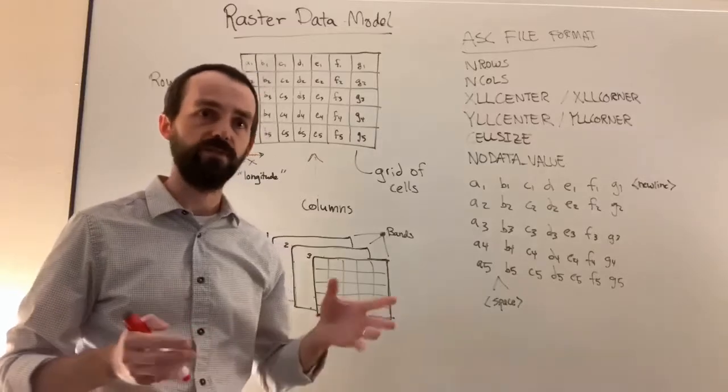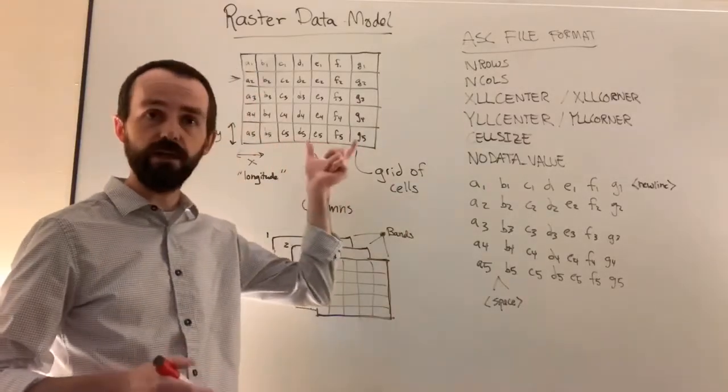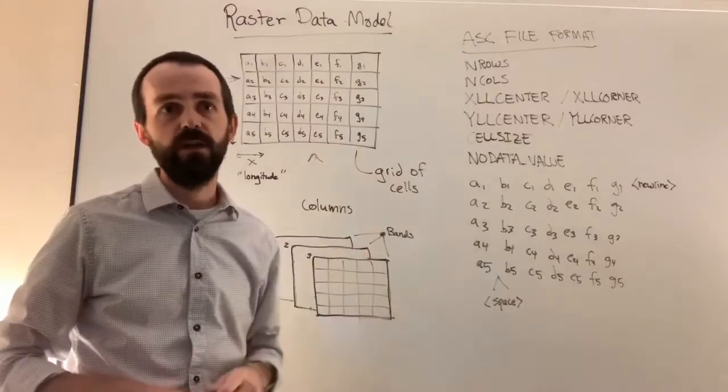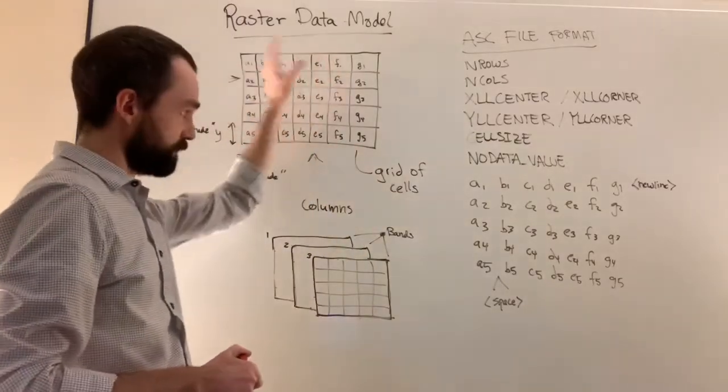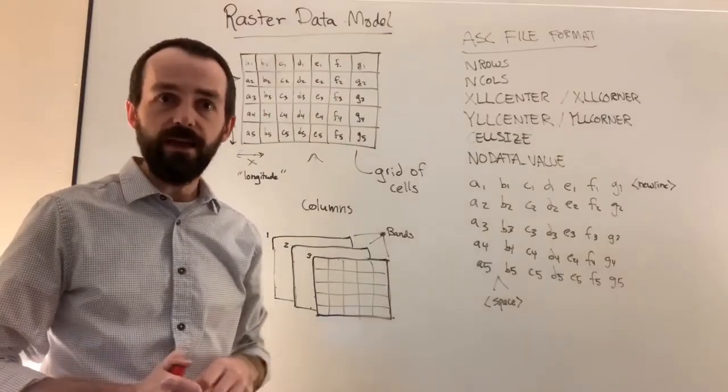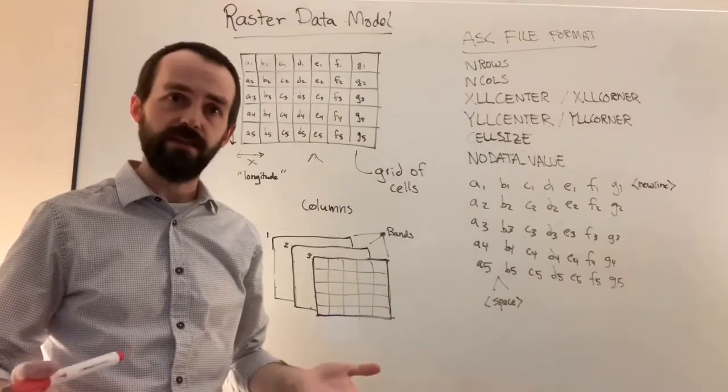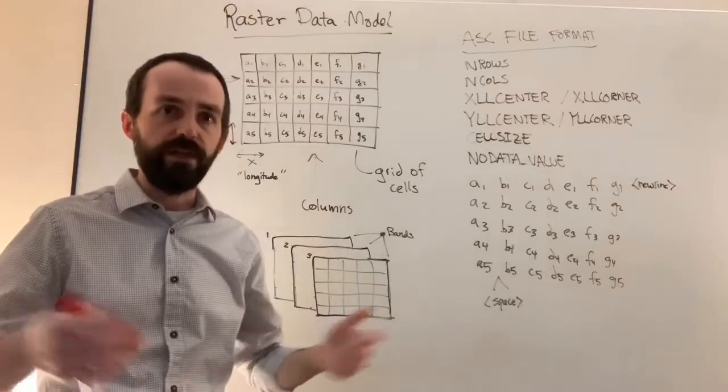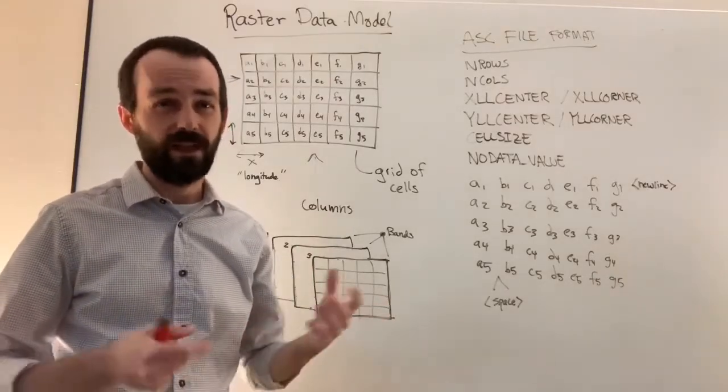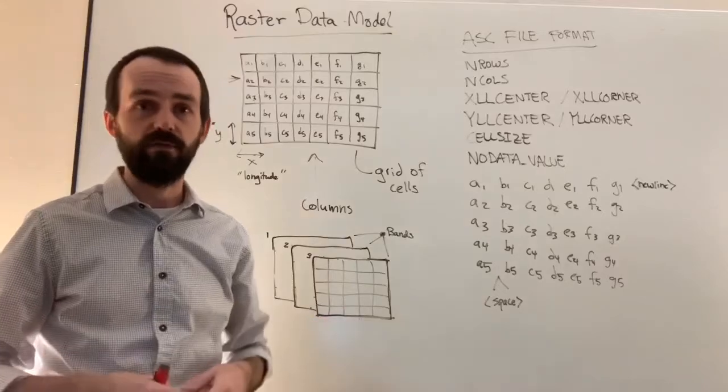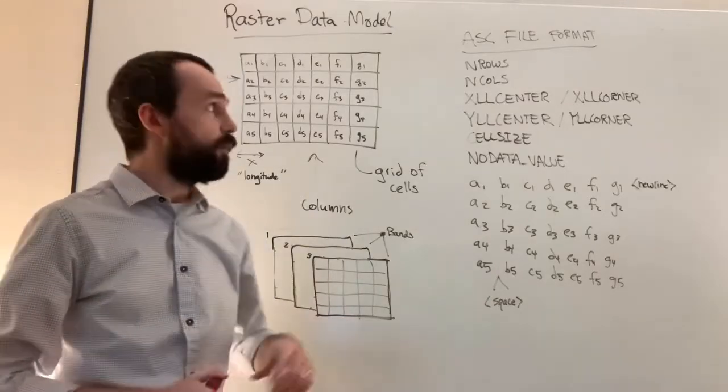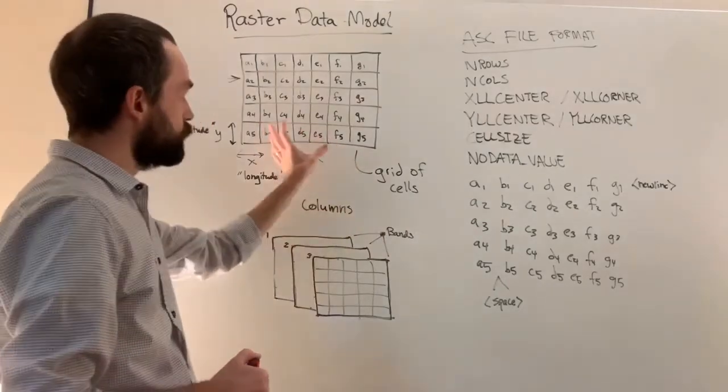Typically, a raster file is broken up into a regular grid of cells. Each cell can have one value. So we have numbers that go into each one of our cells, and those values then represent something, whether it's a measurement or categorical data. In a photograph, it's the quantity of red or green or blue light. So we now have this regular grid of cells.